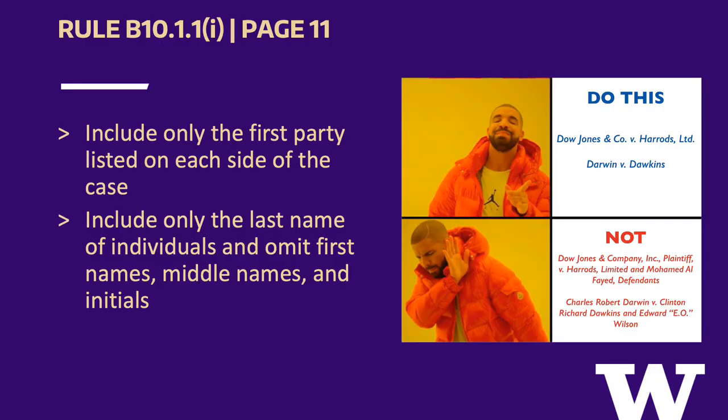Rule B10.1.1(I) states that only the name of the first party on either side of the v. should be included in a citation. In the first example, the author properly dropped Mohamed Al-Fayed and included only Herod Limited on the right side of the citation. Similarly, in the second example, the author properly dropped Edward E.O.